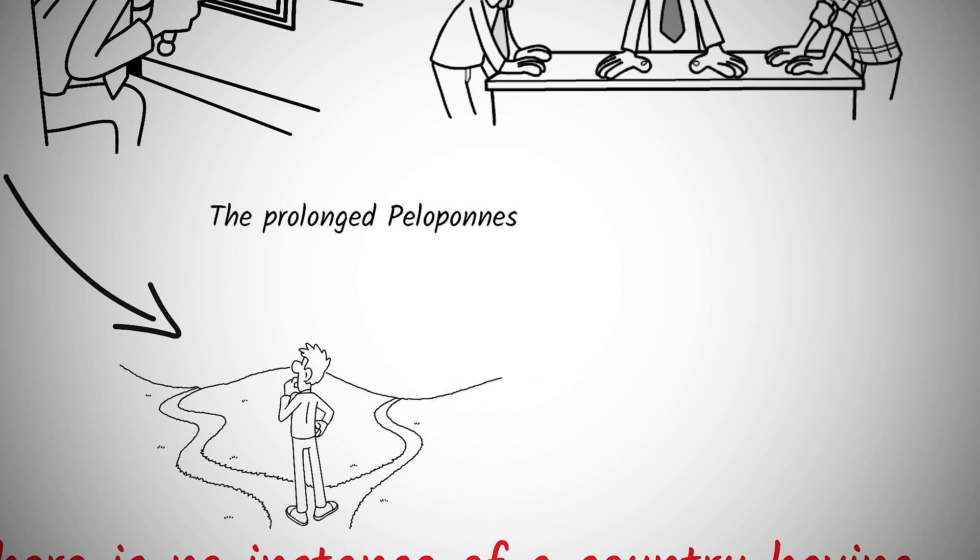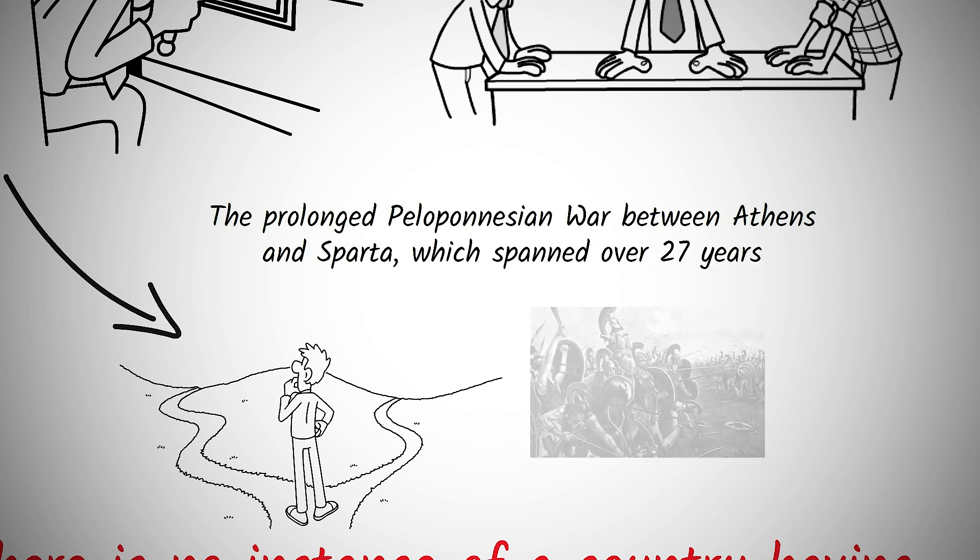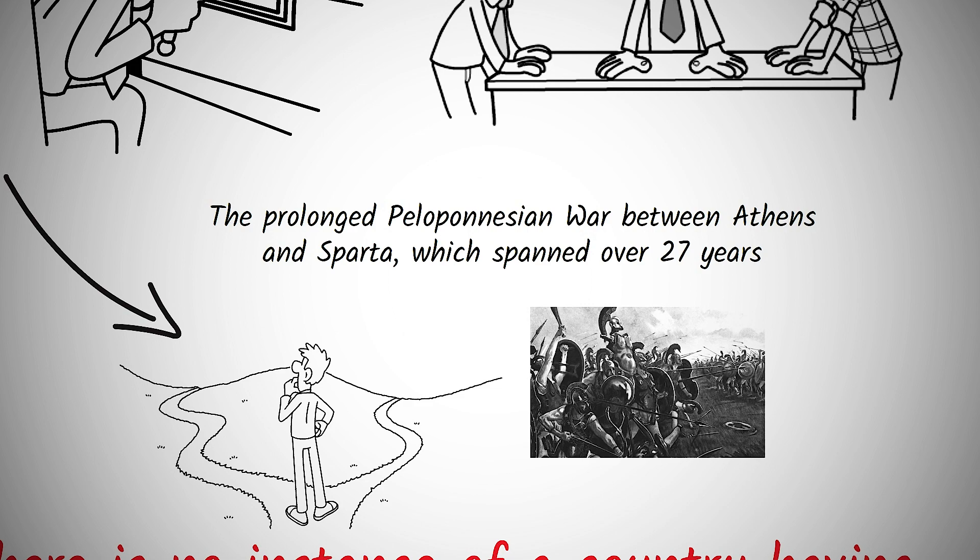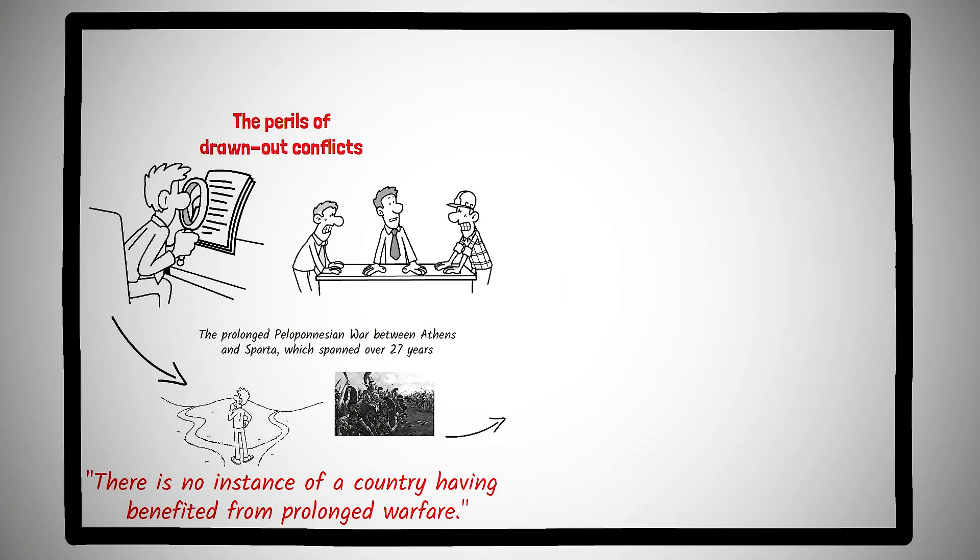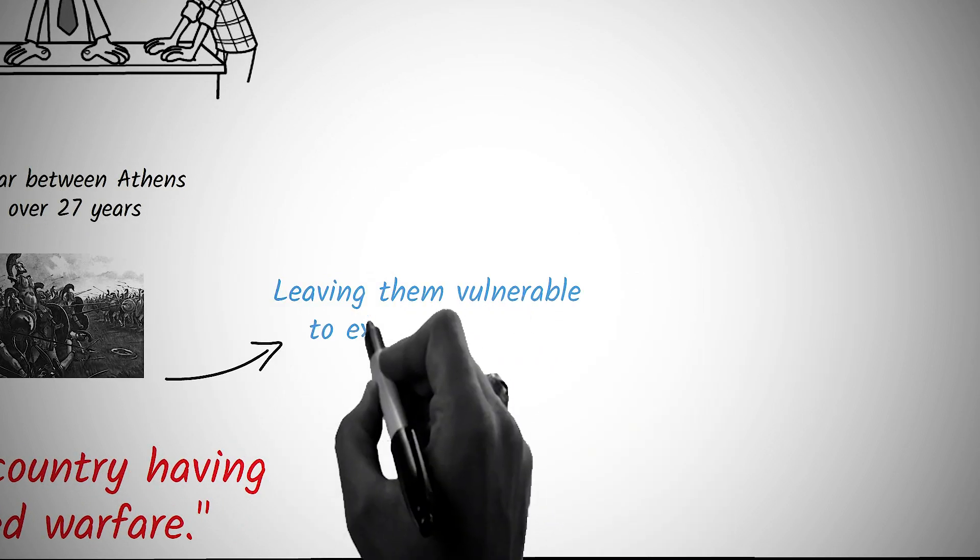Reflect on the prolonged Peloponnesian War between Athens and Sparta, which spanned over 27 years. While both sides had their moments of glory, the extended nature of the conflict resulted in devastating losses, political upheaval, and an eventual weakening of both powers, leaving them vulnerable to external forces.